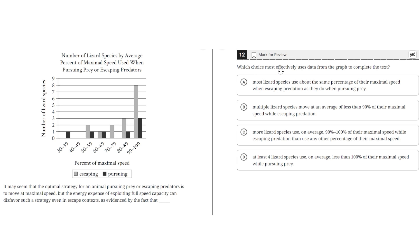Which choice most effectively uses data from the graph to complete the text? It may seem that the optimal strategy for an animal pursuing prey or escaping predators is to move at maximal speed, but the energy expense of exploiting full speed capacity can disfavor such a strategy even in escape contexts, as evidenced by the fact that blank.